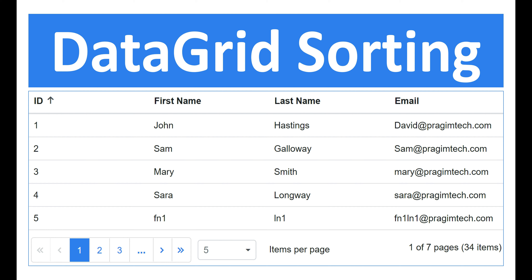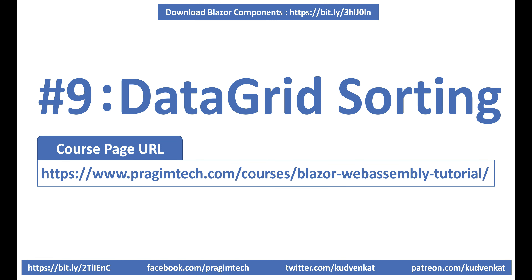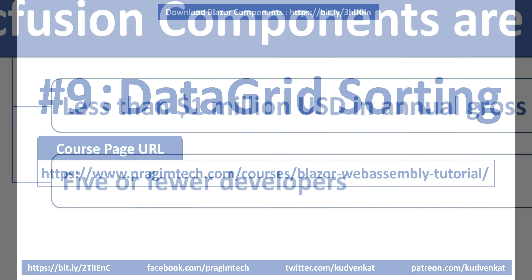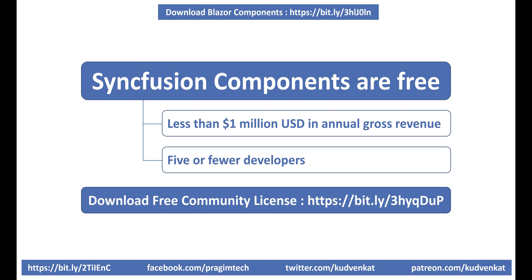Hey guys, I am Venkat and this is part 9 of the web development with Blazor series. In this video, we'll discuss how to perform sorting in Blazor DataGrid. We discussed paging in our previous video. I'll include the link to the complete course page in the description box below. We're using the Syncfusion DataGrid component, which is free to use. Use the link in the description to claim your free license.